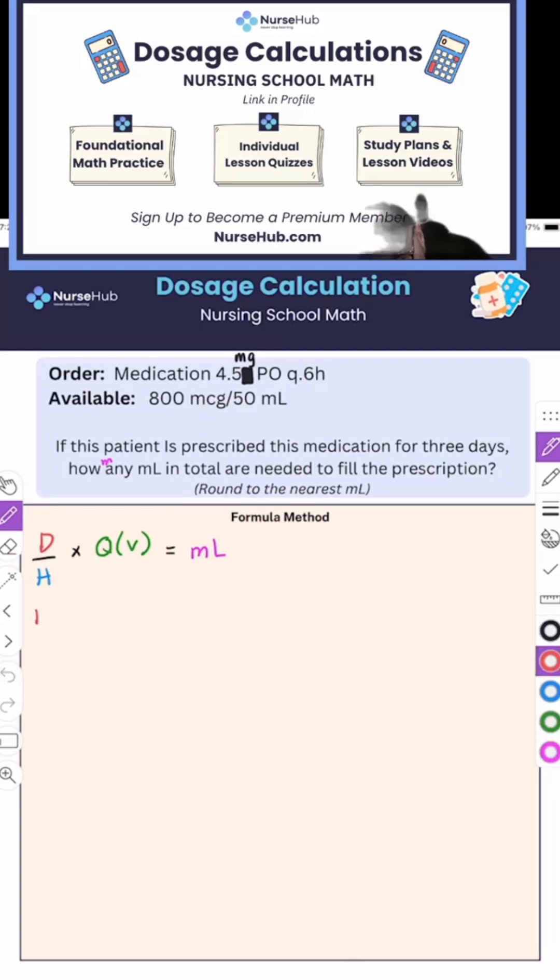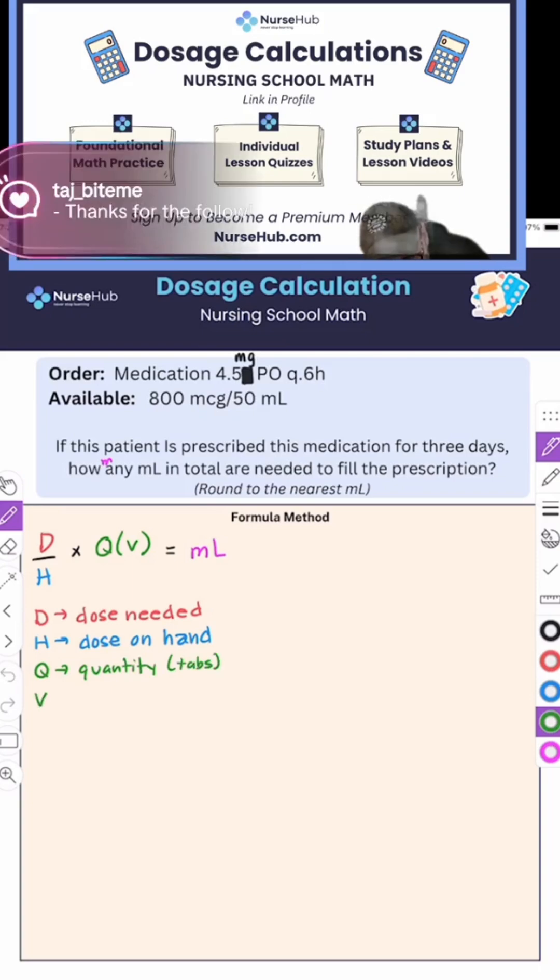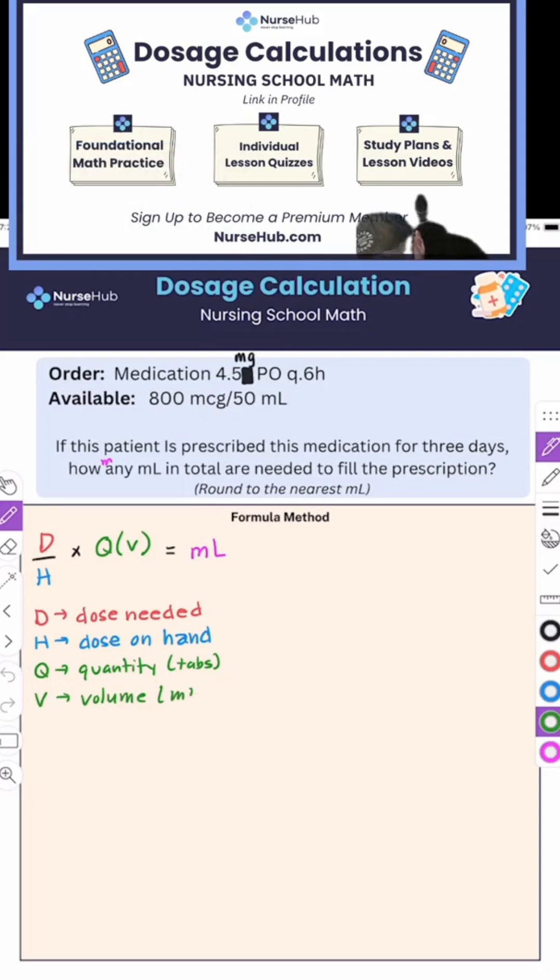So your D is your dose needed. Your H is dose on hand. Q usually stands for quantity. I use Q when I'm thinking about tablets. When I'm doing liquid, I think about volume, which is my milliliters.